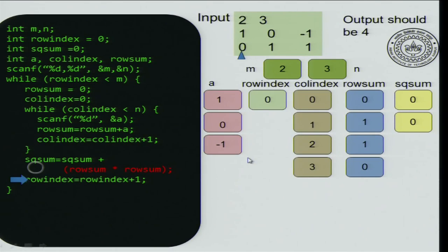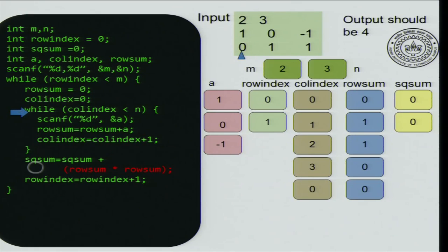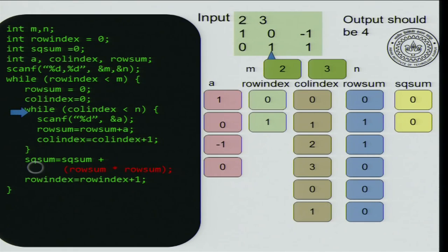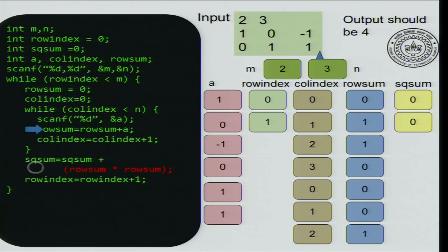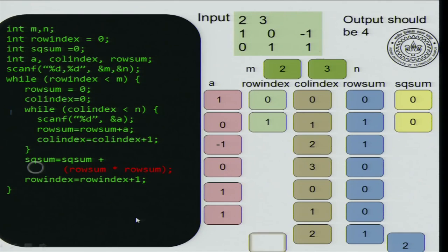We add row sum squared to square sum: 0 squared added to square sum, so square sum remains 0. Now go to the second row — increment row index. Row index is 1, which is less than 2, so we read row 1. Re-initialize row sum to 0 and column index to 0, then scan the next number which is 0, add it, increment the column index, scan 1, and so on, until we finish reading the second row. The row sum turns out to be 2, and square sum becomes square sum plus 2 squared, which is 4.